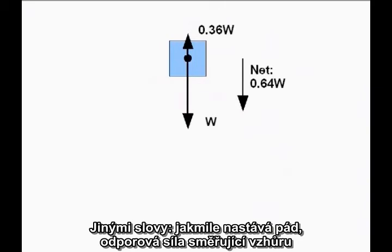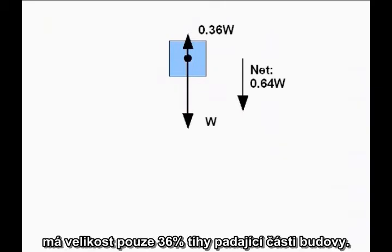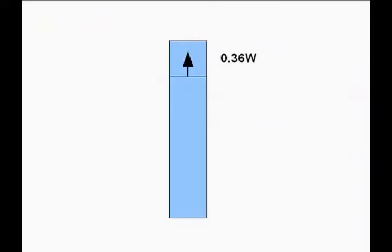In other words, once it starts falling, the upward resistive force is only 36% of the weight of the falling section of the building. So far, so good.